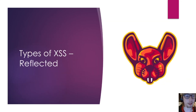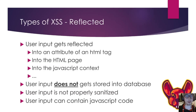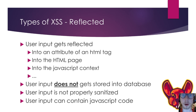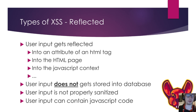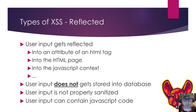With reflected cross-site scripting, the user input gets reflected — it can come from a GET parameter — and that input gets reflected into an HTML tag, the HTML page, or a JavaScript context. Importantly, it does not get stored in the database; it's only reflected on the page. If user input is not properly sanitized and contains JavaScript code, it's easily executed — and you have a cross-site scripting attack.